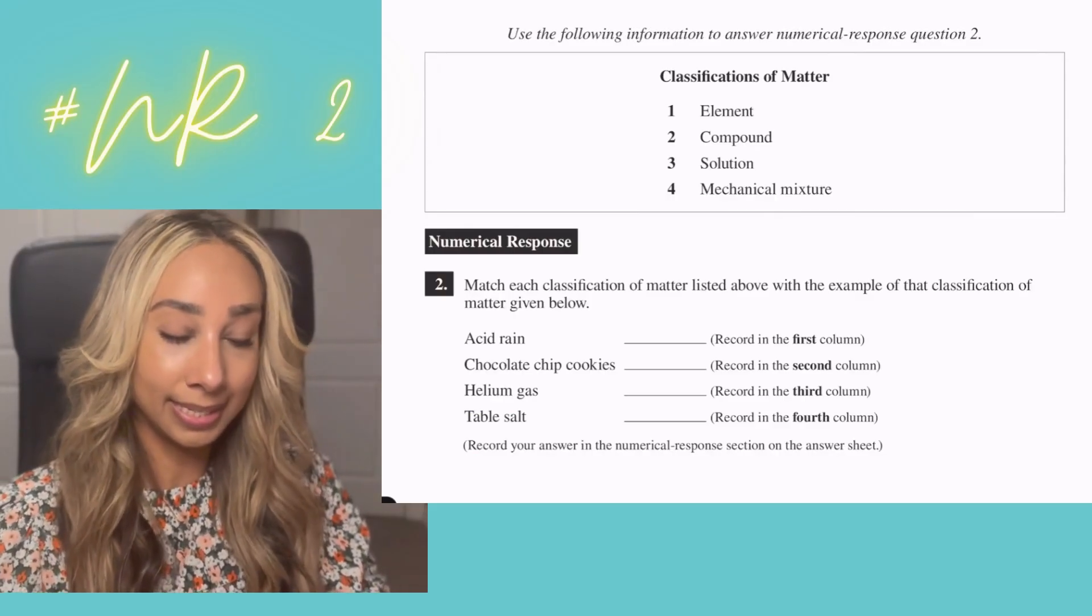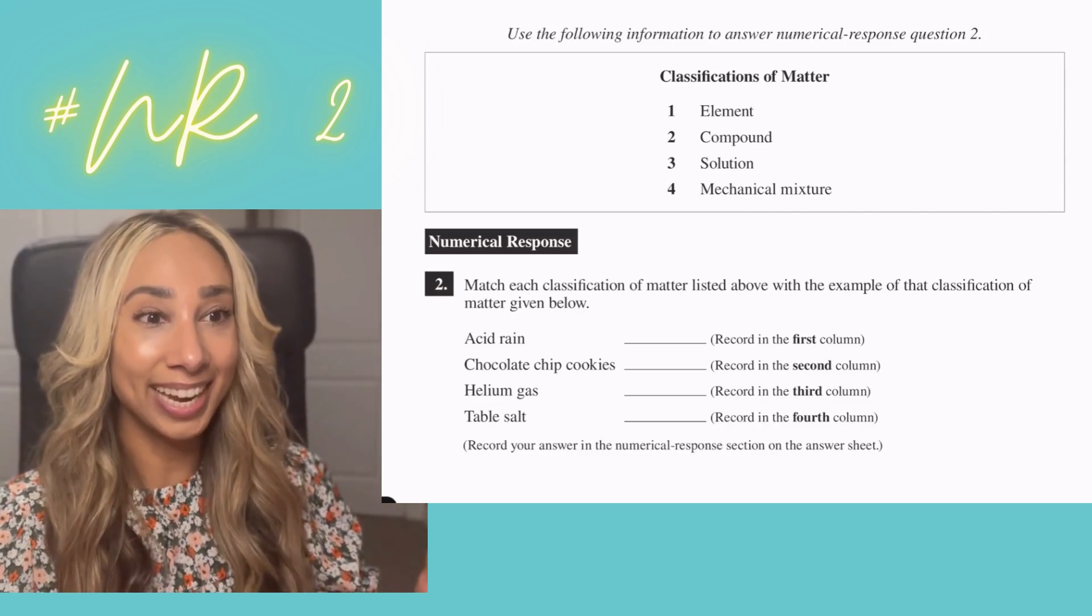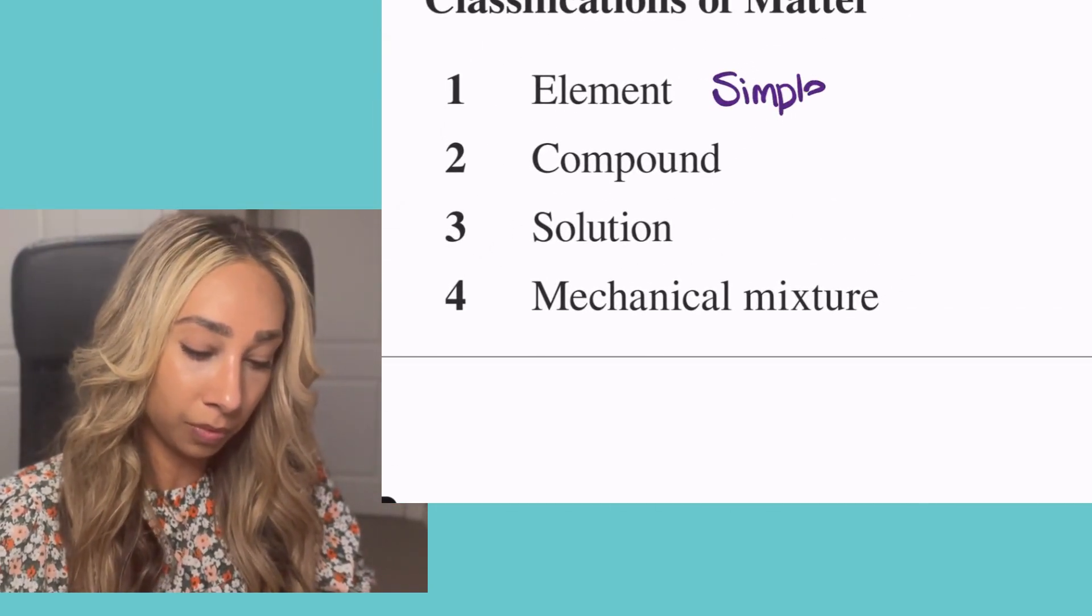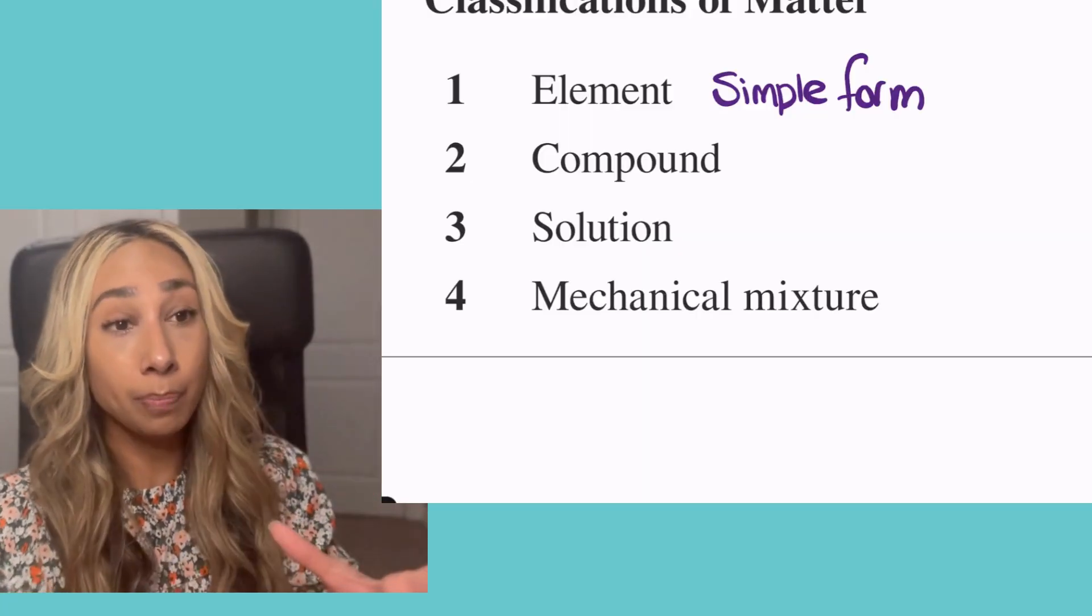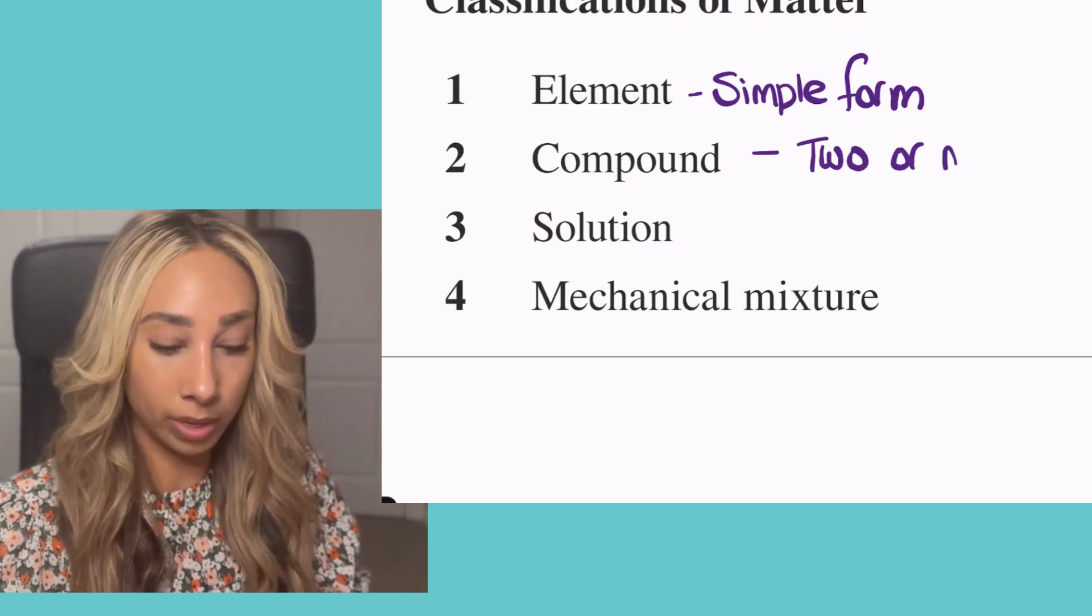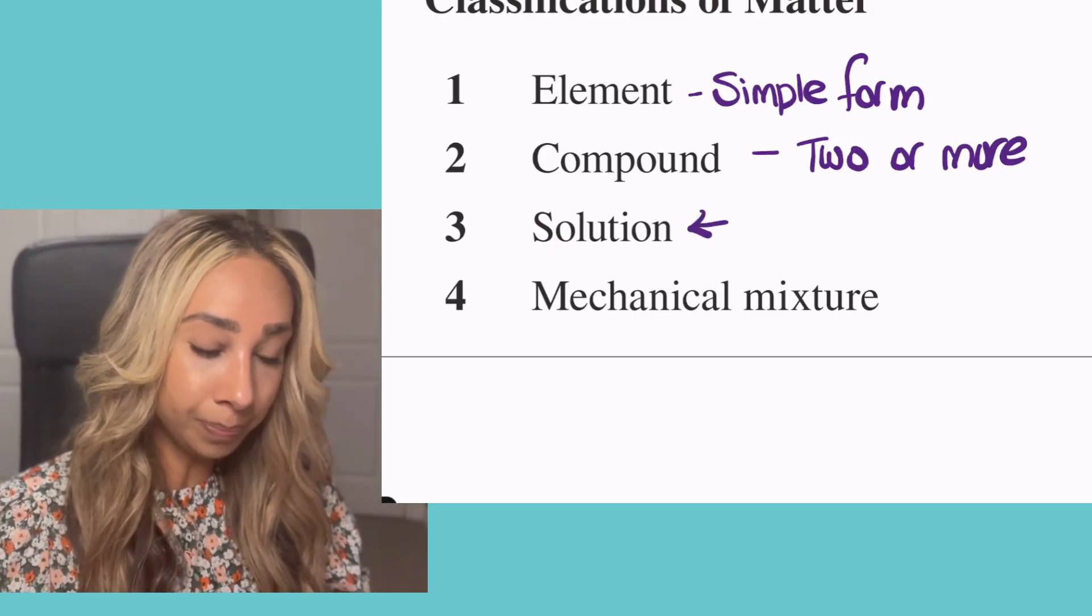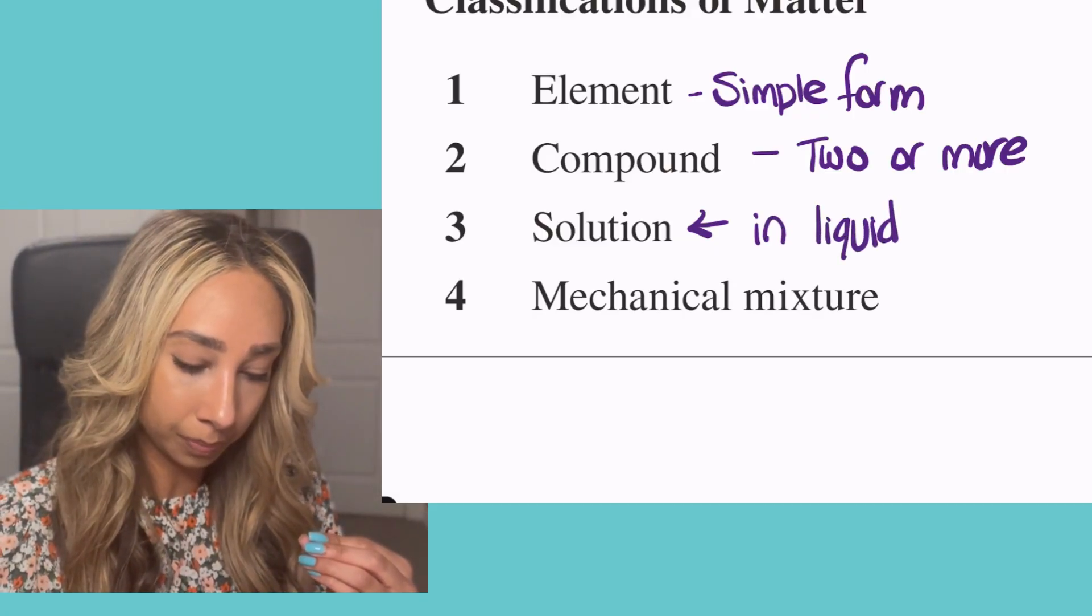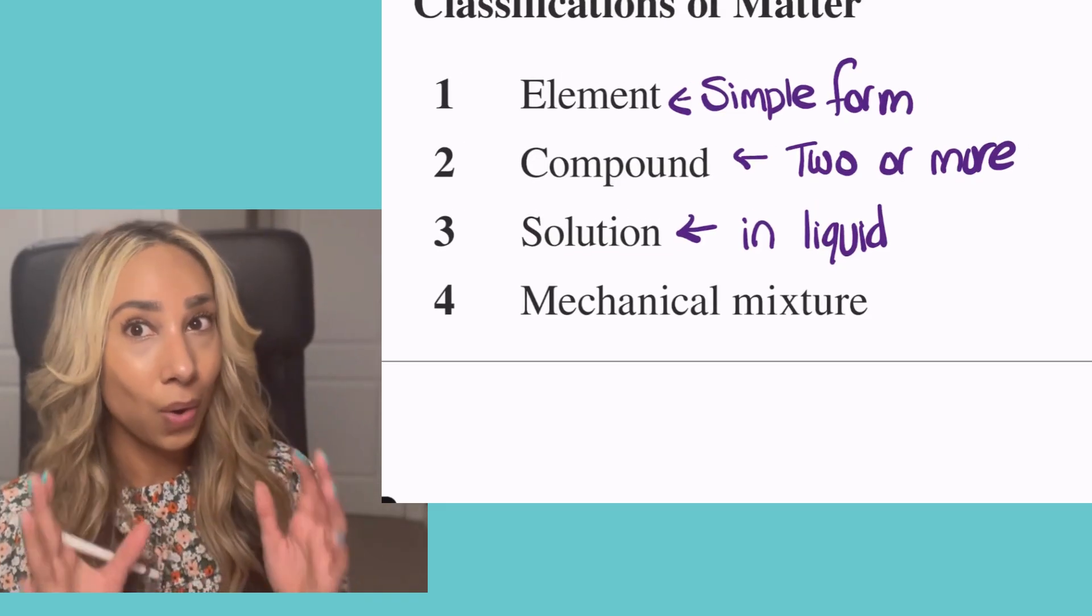What we need to do here is decide which of these classifications of matter are an element, a compound, a solution, or mechanical mixture. An element, I really just think of it as its most simple form. A compound is two or more substances, most of the time two elements coming together. A solution is a compound or an element in liquid. A mechanical mixture is two or more substances mixing together.